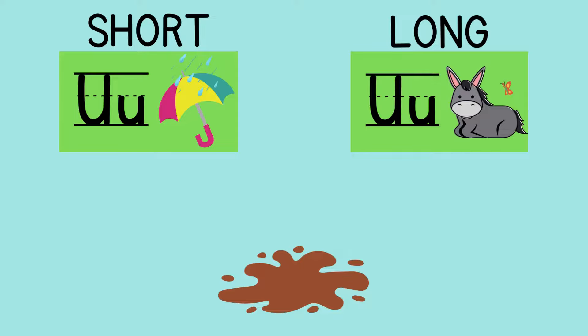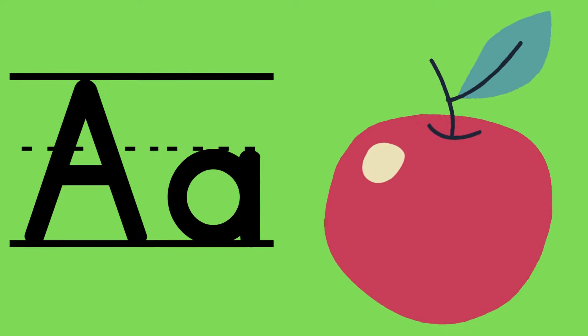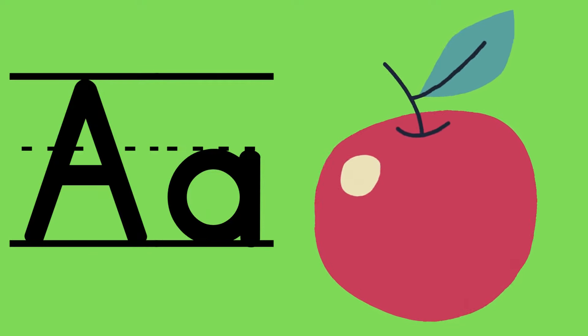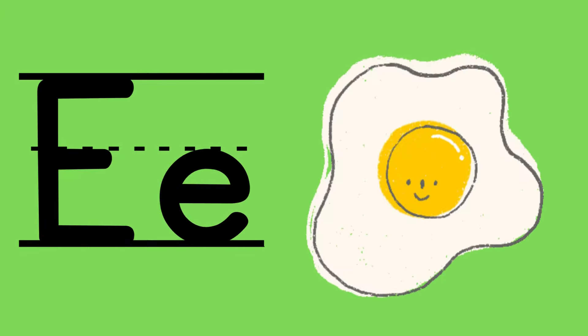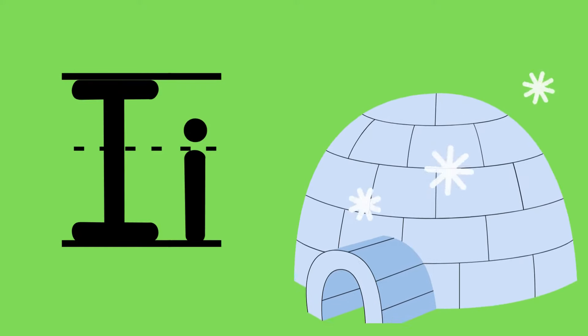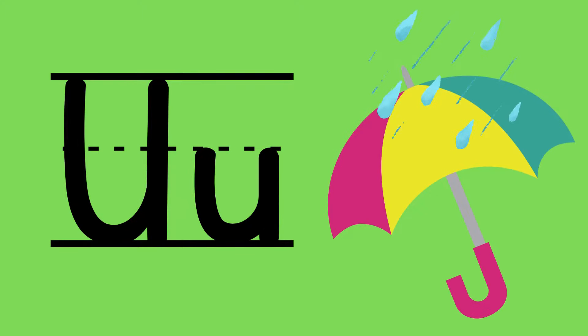Great work! Remember that the short sounds are said in a short way. So A would be 'a' apple - see how we can say that fast? 'a' apple, 'e' egg, 'i' igloo, 'o' octopus, 'u' umbrella. Those are short sounds, and we say them in a short way.